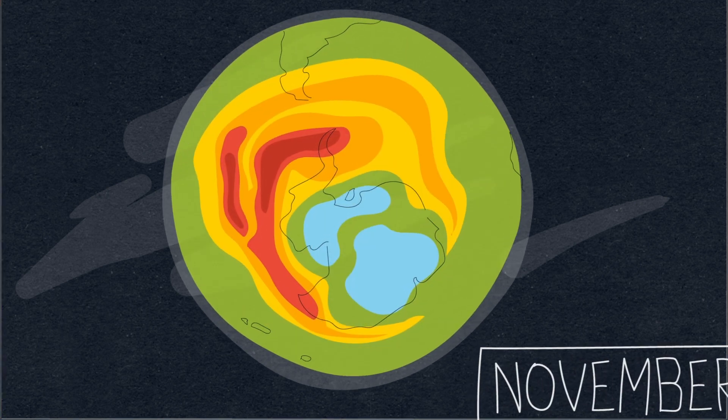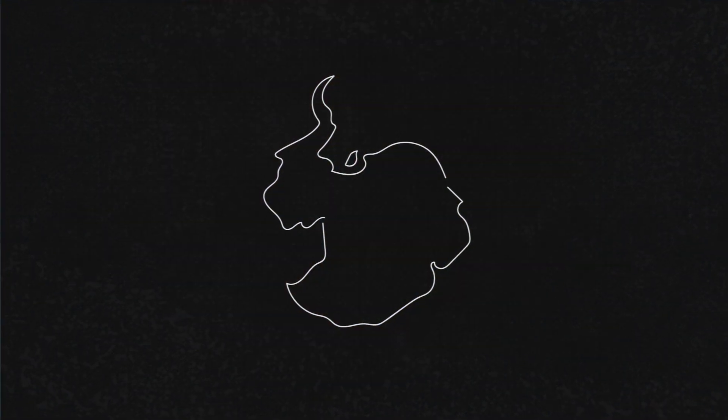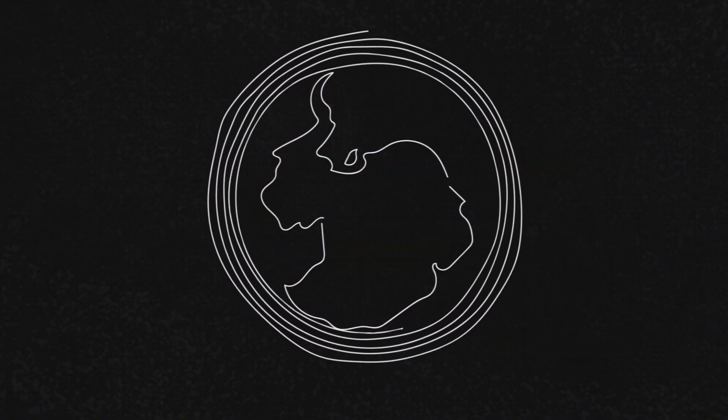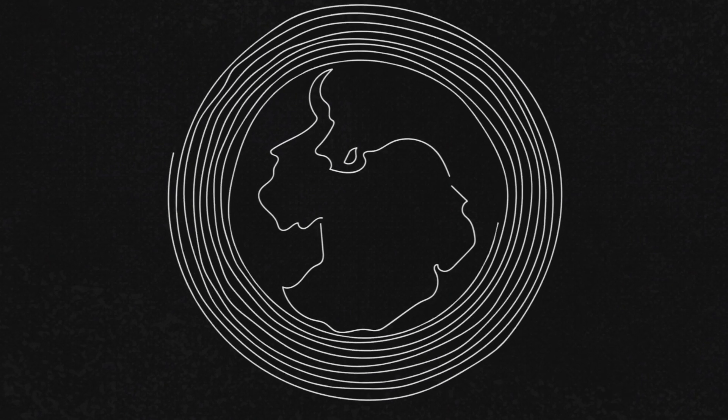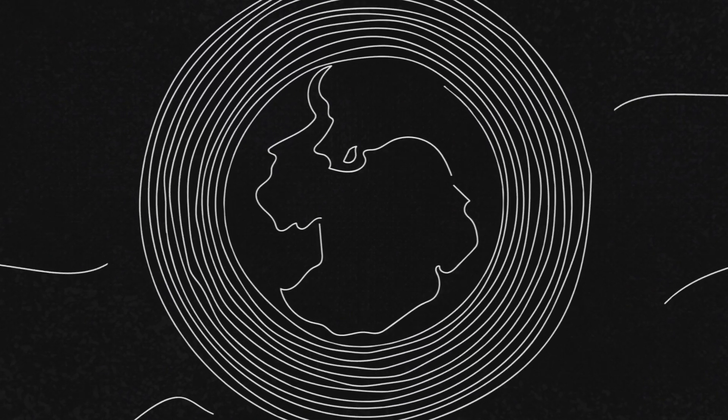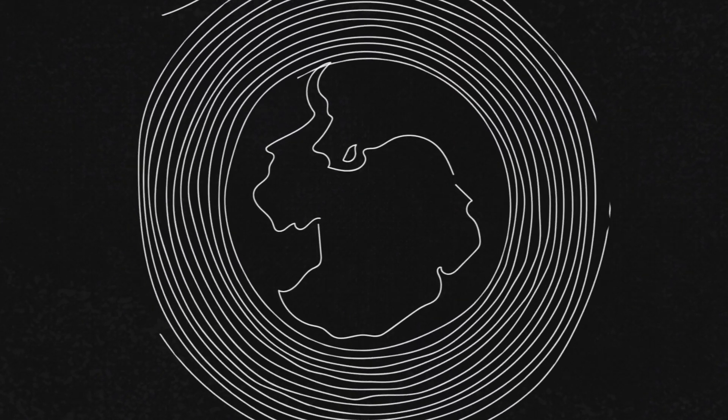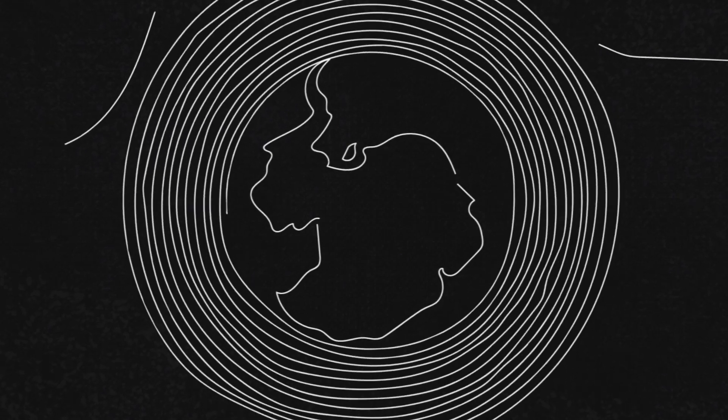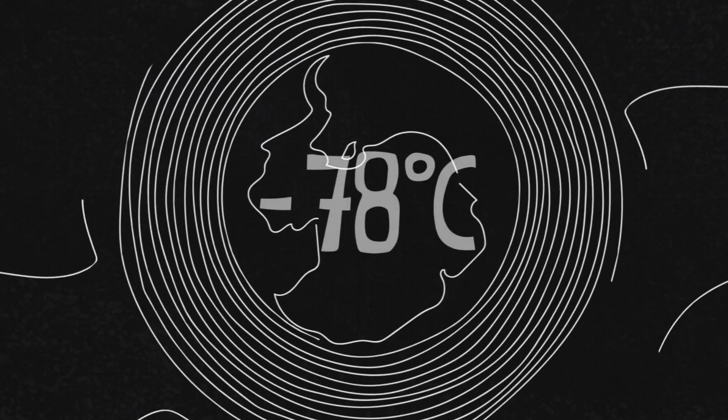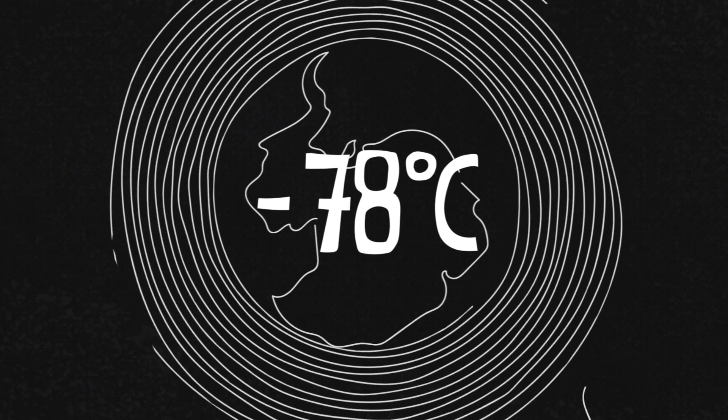This happens because during winter the entire polar region is in darkness and a powerful wind pattern called vortex develops. This vortex isolates the polar region from the rest of the atmosphere and causes temperatures to fall below minus 78 degrees Celsius, at which point polar stratospheric clouds form.